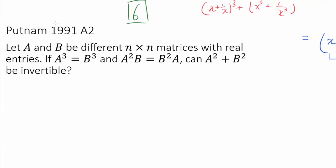This one is 1991 A2. Let A and B be different n by n matrices with real entries. If A cubed is equal to B cubed and A squared B is equal to B squared A, can A squared plus B squared be invertible?